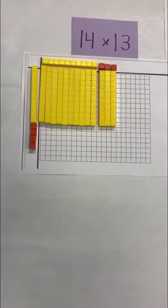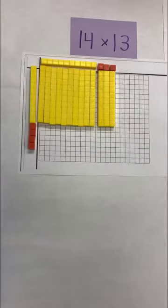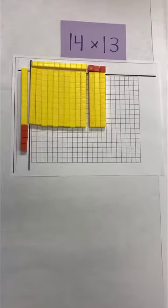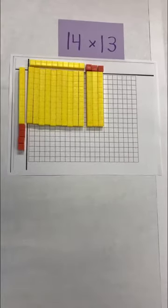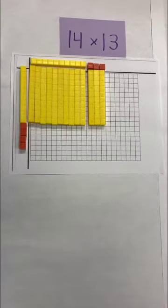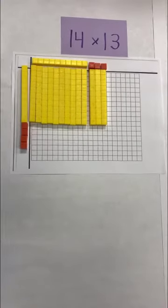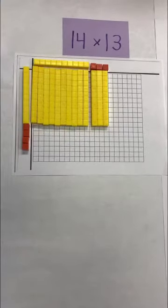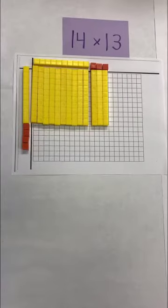For fourth graders the goal is to go to multiplying a four digit number by a one digit number and a two digit number by a two digit number using whole numbers through strategies.